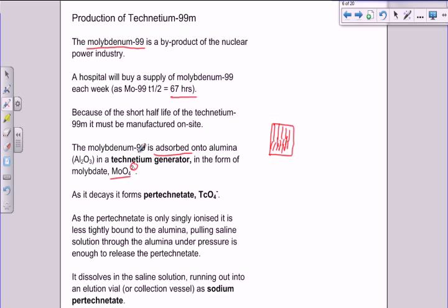Now, pertechnetate has the formula TcO4 1-, a single negative ion, which contains the radioactive technetium. Now, the thing is that this pertechnetate is only singly ionized, whereas the molybdate is doubly ionized, and as such, it forms a less strong bond, a looser bond, if you like, with the alumina. So it's still bonded to the alumina, but less strongly because of the singly ionized molecule.